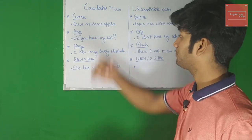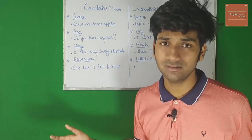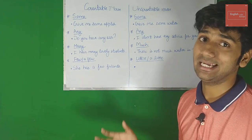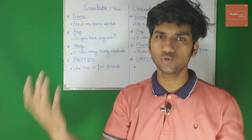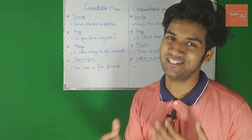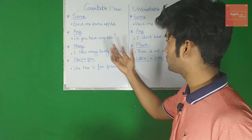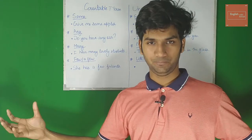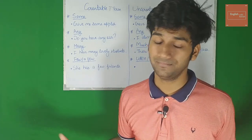Next we have 'any' — used with both countable and uncountable nouns. 'Do you have any friends?' 'Do you have any laptop?' — countable. 'I don't have any advice for you' — uncountable. Next is 'many', which means a big, positive number. 'I have many lovely students' — students is countable, so 'many' works. But you cannot use 'many' with uncountable nouns — you cannot say 'I have many water', 'I have many copper', 'I have many love'.